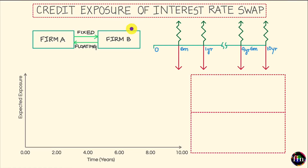In this video, we will analyze plain vanilla interest rate swaps with respect to their credit risk exposure. Specifically, for interest rate swaps, we will try and build the time profiles for three important metrics: number one, expected future value; number two, expected exposure; and number three, potential future exposure.